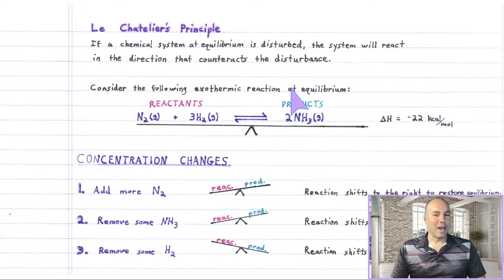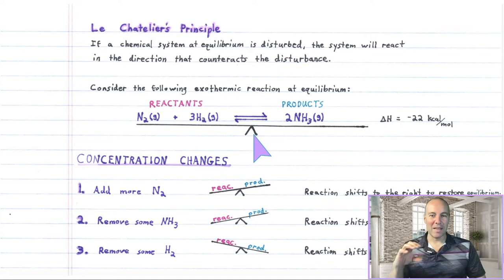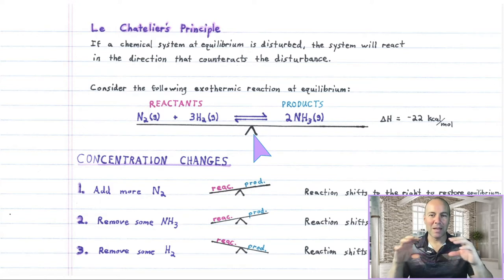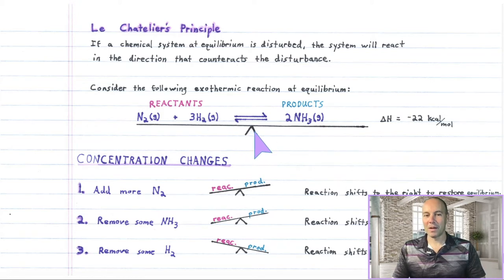If you have a mixture at equilibrium, I like to imagine a little balance beam underneath the chemical equation. So I draw the balance beam. And if it's at equilibrium, then the amount of products balances the amount of reactants. It doesn't mean the masses of the products equal the masses of reactants, but the proportions are balanced — they're equilibrium proportions. So here's the mixture at equilibrium on the balance beam.